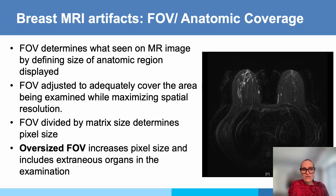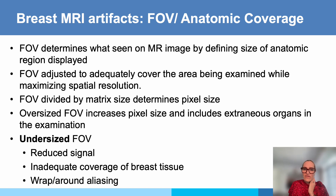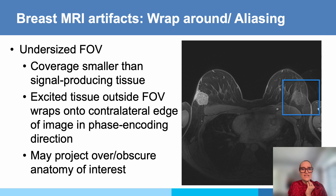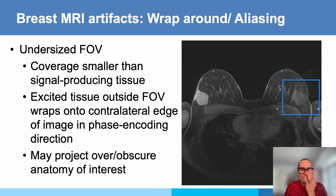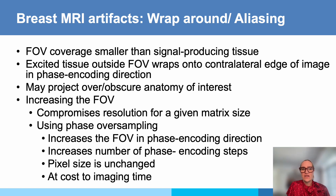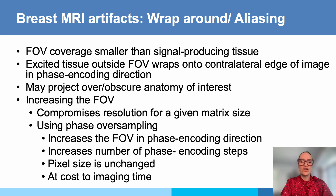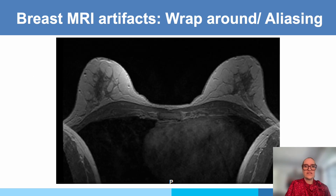Anatomic coverage is very important. An oversized field of view increases pixel size and includes extraneous organs you don't need — we want to cover just the area of interest. When the field of view is too small, you have reduced signal, inadequate coverage, and most often wrap-around aliasing artifacts, as seen here with the arm wrapping into the anatomy. The technologist usually spots this immediately and adjusts the field of view to eliminate such wraparound artifacts.